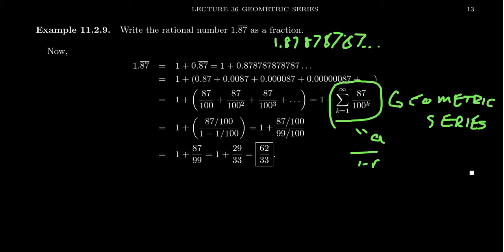The constant ratio is 1 over 100, where 100 is 10 squared, the length of the period. So you get 87 over 100 divided by 1 minus 1 over 100. 1 minus 1 over 100 will be 99 over 100.